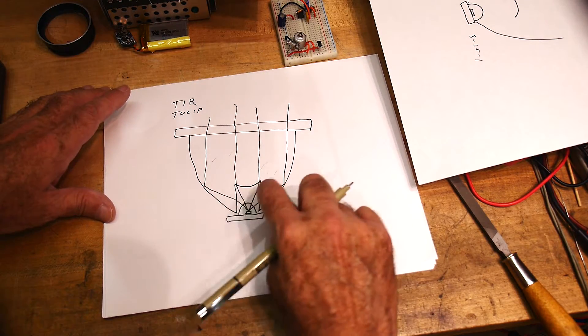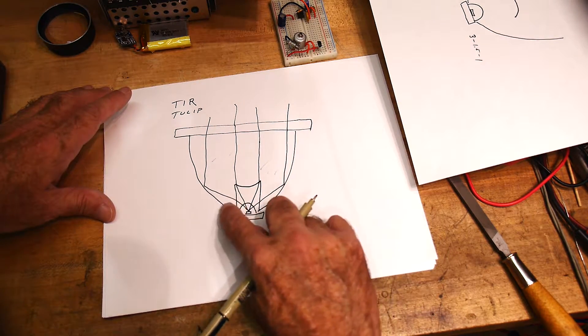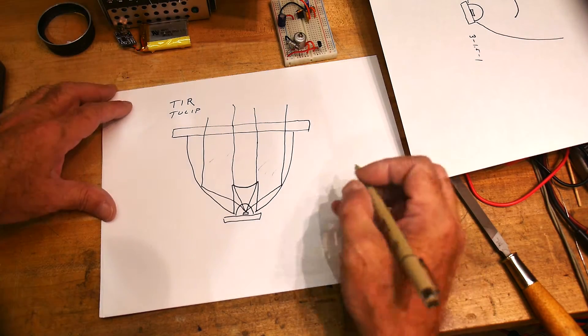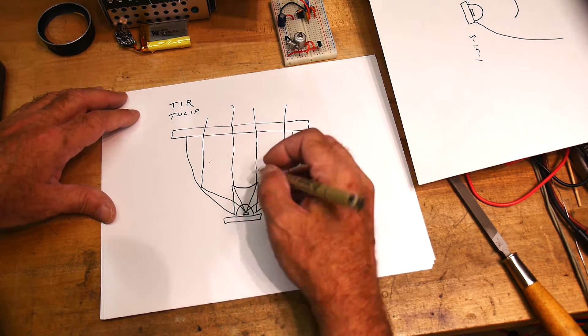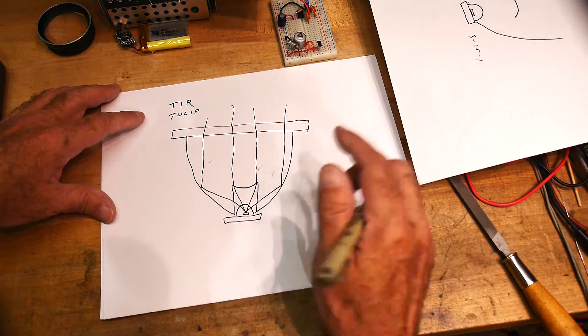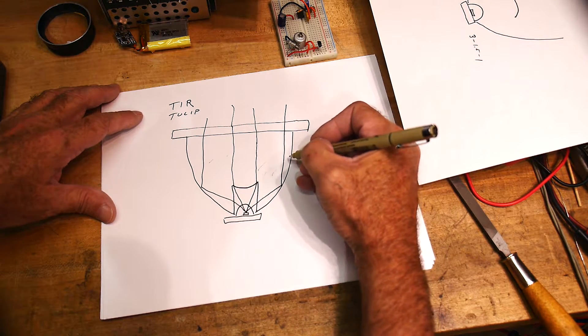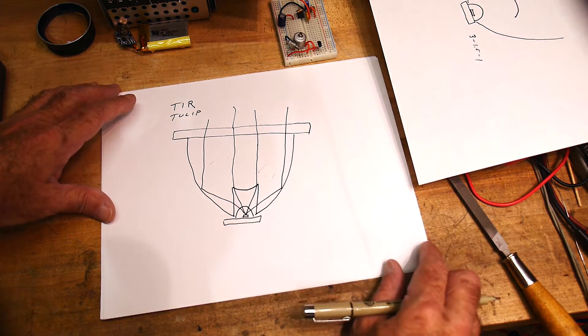So you get both things—you get this little bend here and this here. So this works as a normal lens, and this, instead of putting an aluminum coating on this thing, they're going to use something called TIR.